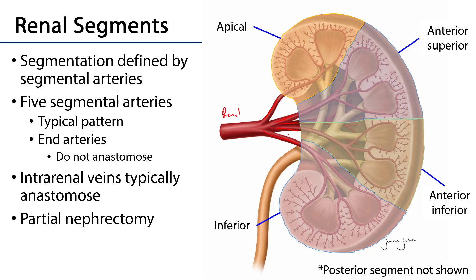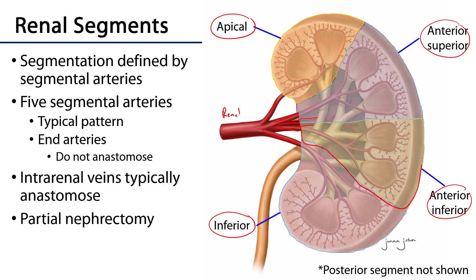These segments include an apical, sometimes called the superior segment, as well as an inferior segment. There are also anterior superior and anterior inferior segments. And there is a posterior segment that basically overlaps with the anterior superior and anterior inferior segments — so those are the five segments. Even though the segmental arteries and their branches don't anastomose, some of the intrarenal veins will typically anastomose with one another.